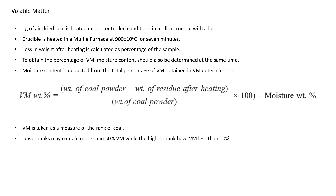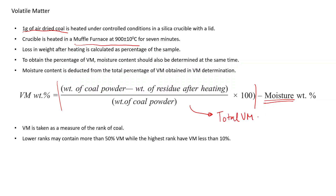Next is volatile matter. Volatile matter consists of all those constituents which can escape the substance — different types of gases or substances which break down on heating. We use 1 gram of air-dried coal heated in a muffle furnace at 900 degrees Celsius for 7 minutes and calculate the loss in weight percentage. Remember that moisture is also a type of volatile matter, so to get the true volatile matter other than moisture, we use: weight of coal powder minus weight of residue after heating, divided by weight of coal powder, multiplied by 100. Once we subtract moisture from this, we get the actual volatile matter.